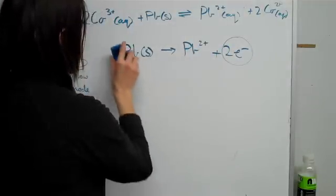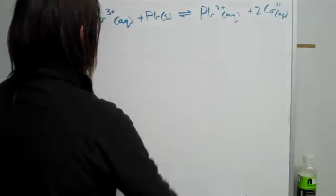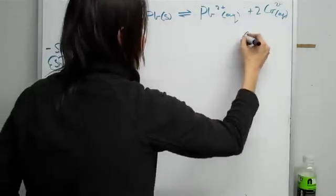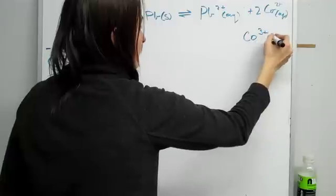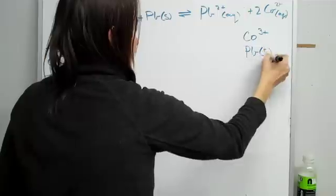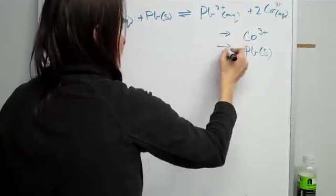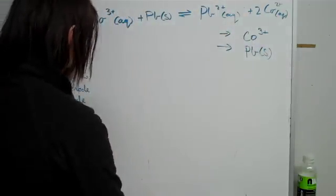So what we'll find is when we set up, we know that lead is cobalt, cobalt three plus, and then we have lead. So this is electrochemical series order. So let's draw a galvanic cell.